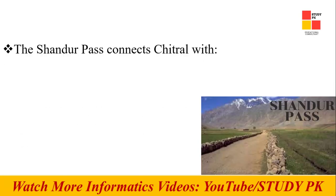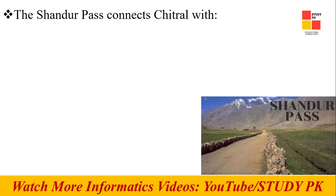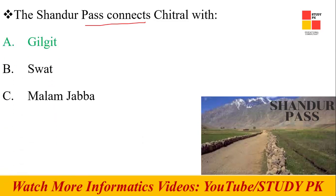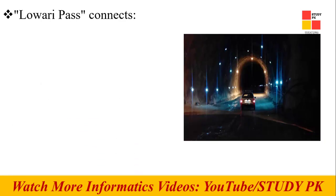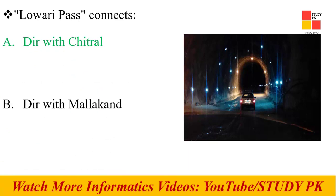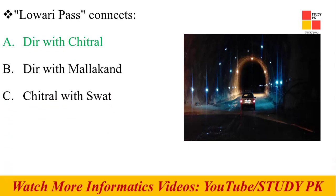Next question: Shandur Pass connects Chitral with which of the following? The right answer is Gilgit. Shandur Pass connects Chitral with Gilgit. Next one: Lowari Pass connects Dir with Chitral. This is the right answer.